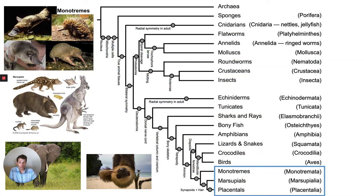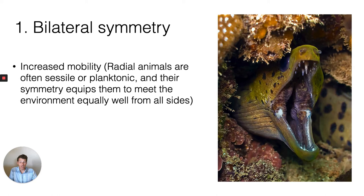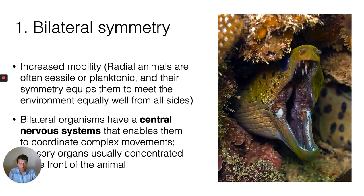Let's walk through a few of the major transitions. The first one is bilateral symmetry. We talked about this in the overview of animal diversity — it led to increased mobility, where radial animals are oftentimes sessile or planktonic. Bilateral symmetry allows organisms to take the world head-on, while radial symmetry allows them to meet their environment equally well on all sides. Bilateral organisms also have a much more developed central nervous system, enabling them to coordinate really complex movements. That bilateral symmetry was super important in driving the diversity of animals because it increased the intensity of predator-prey interactions and competition, leading to new adaptations to catch prey or avoid being eaten.